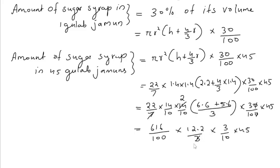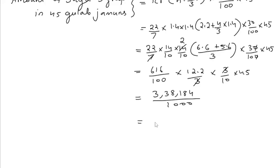Now cancel these 3s. Multiplying all this together we get 338,184 divided by 1000. Dividing this we get 338.184, which is equal to 338 cm³ approximately. So the amount of sugar syrup contained in 45 gulab jamuns is 338 cm³. See you next time.